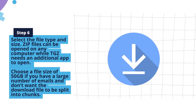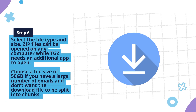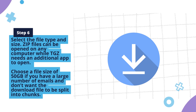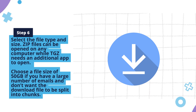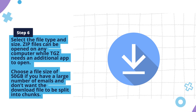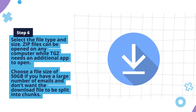Step six: select the file type and size. ZIP files can be opened on any computer, while TGZ needs an additional app to open. Choose a file size of 50 GB if you have a large number of emails and don't want the download file to be split into chunks.